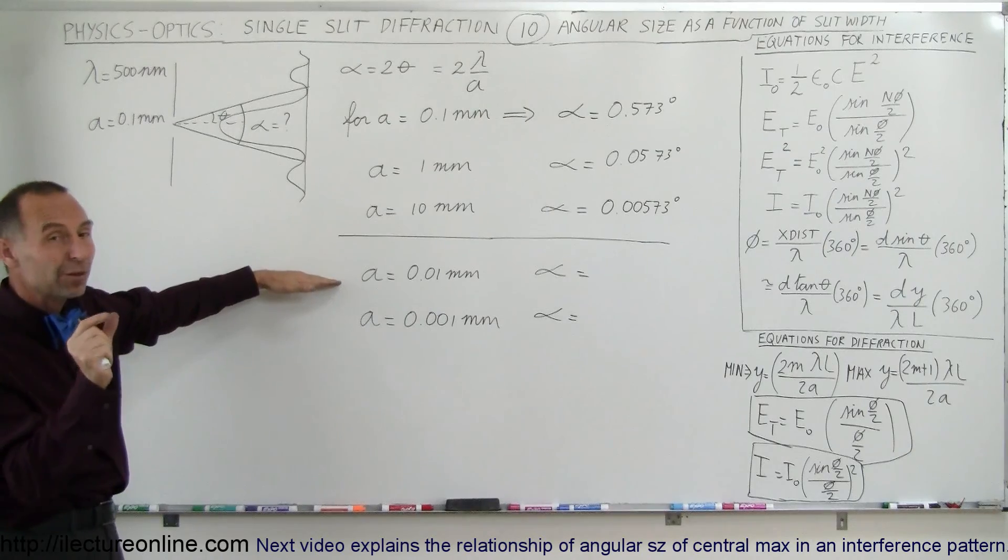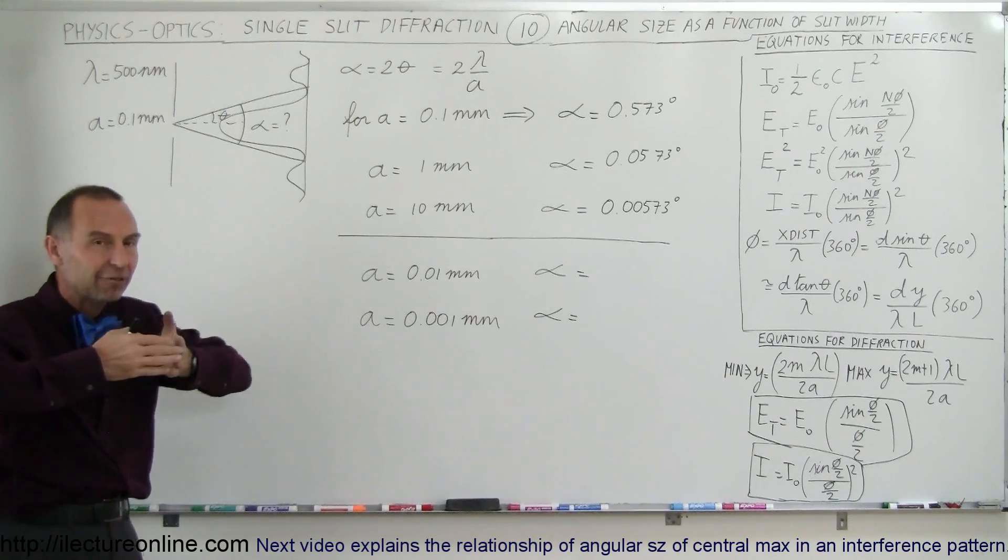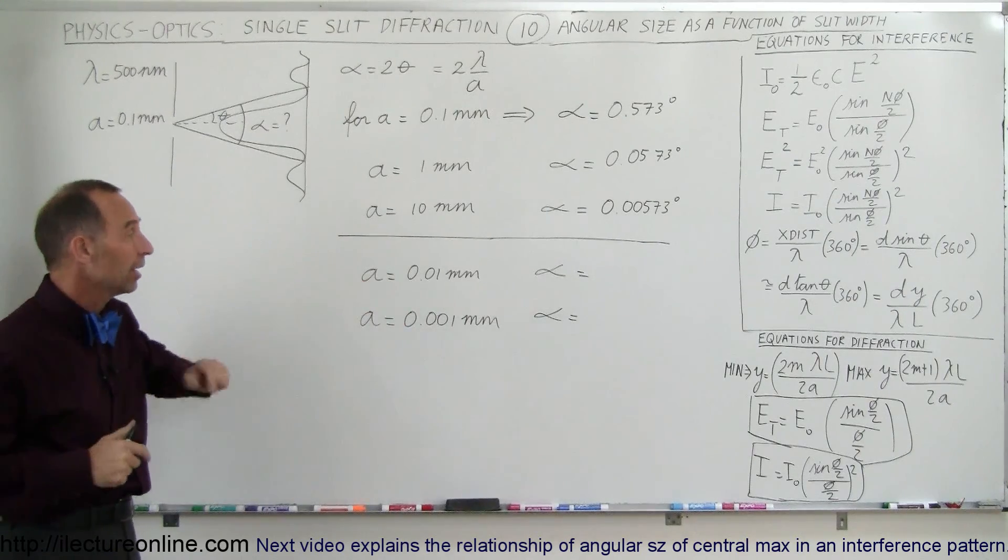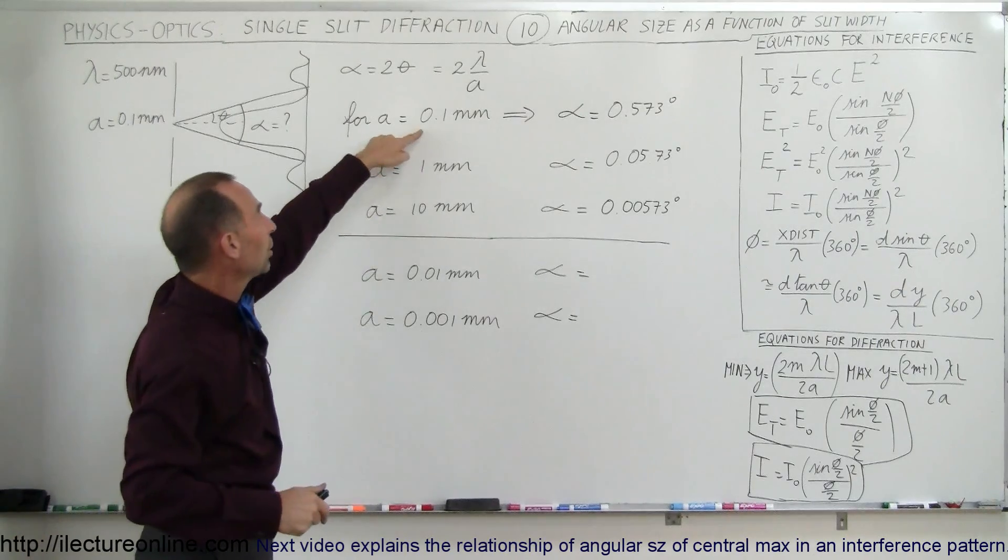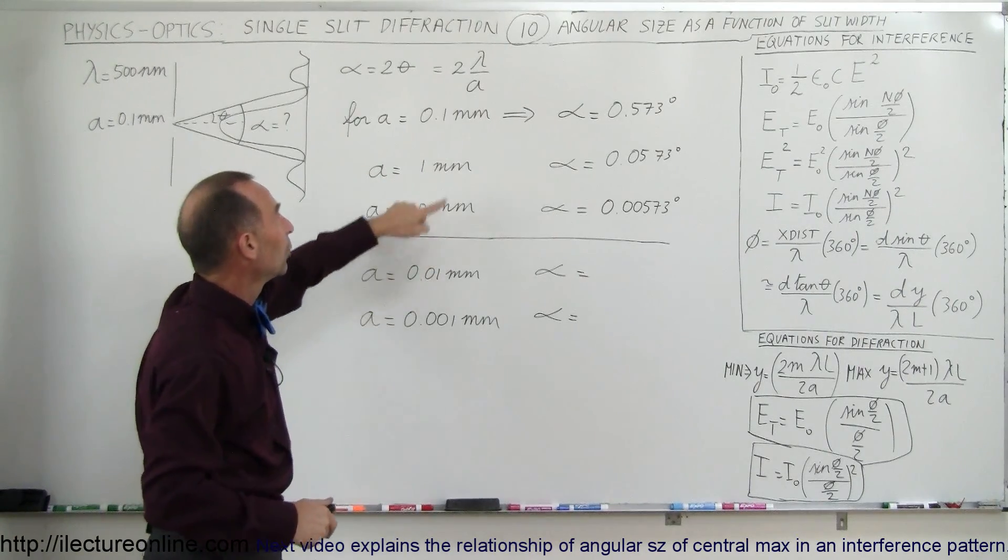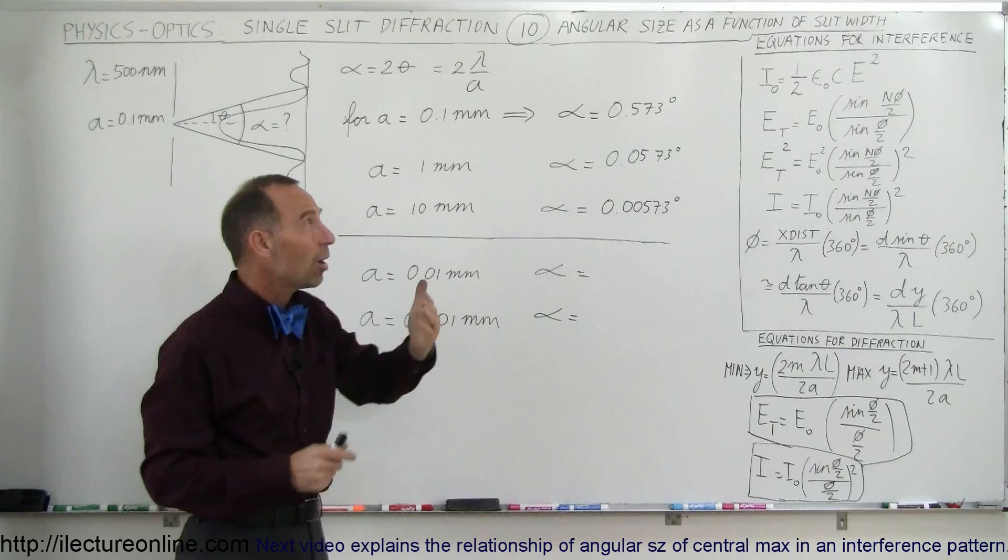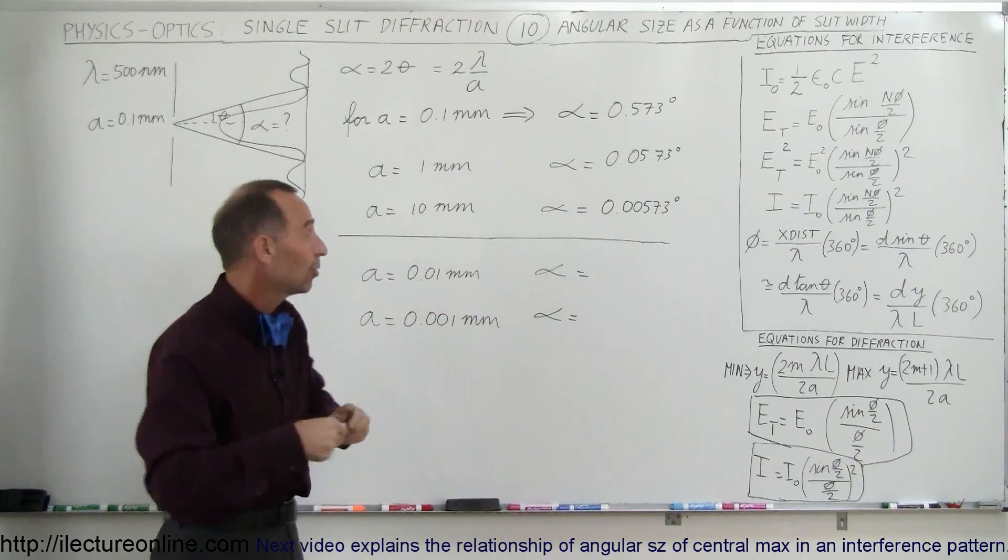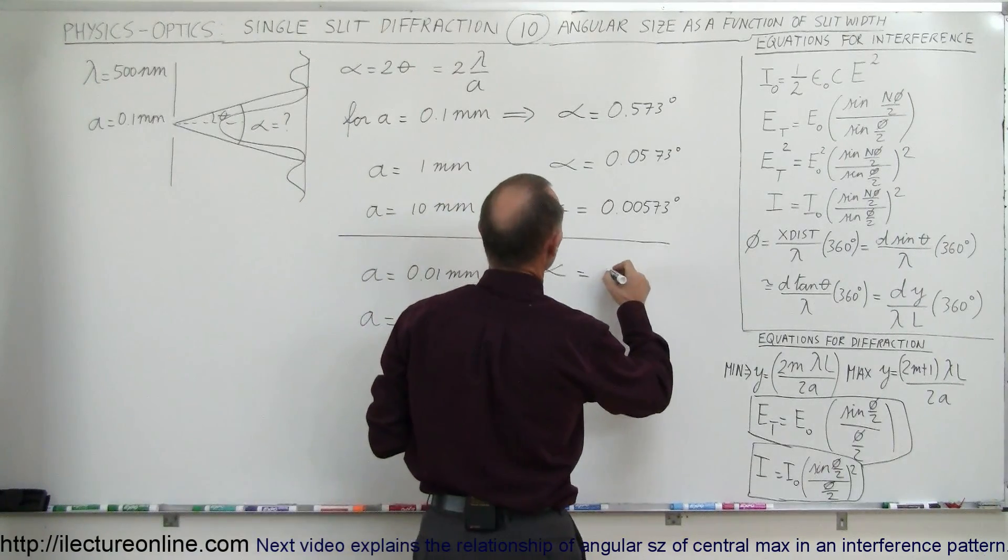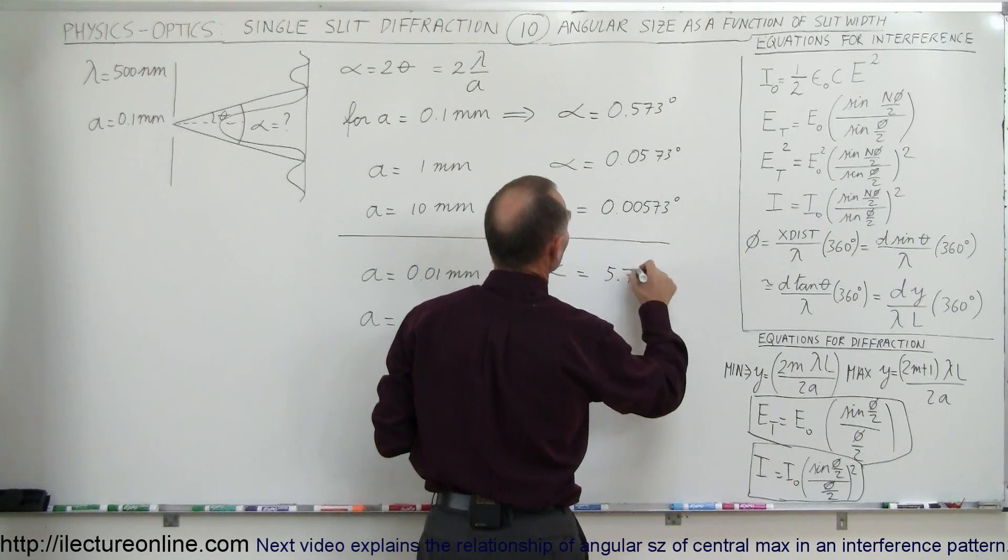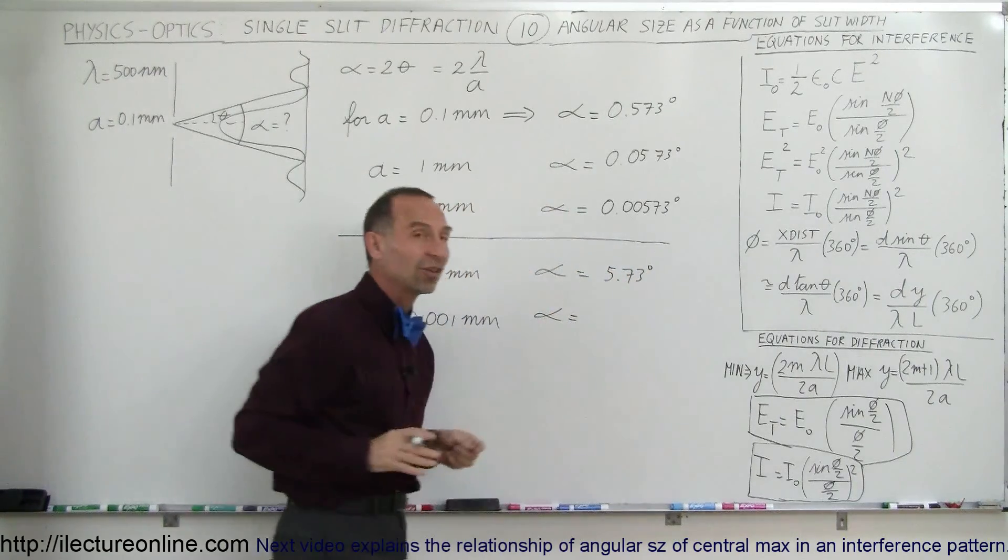Now what happens when the slit width becomes very very narrow? Then the diffraction pattern widens tremendously. Notice when we go from 0.1 millimeter to 0.01 millimeter, we divide by a number that's 10 times as small, therefore the angular size becomes 10 times as big, and you can see that the angle would be 5.73 degrees for the size of the central maximum.